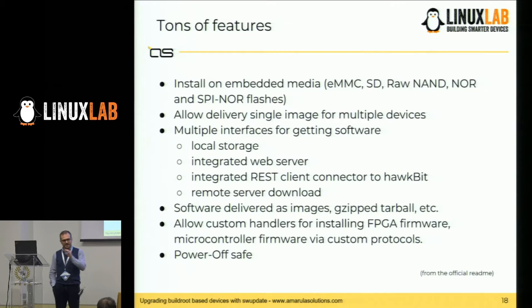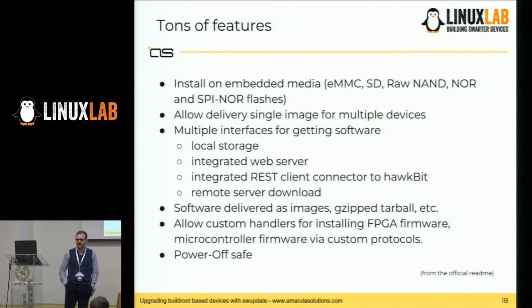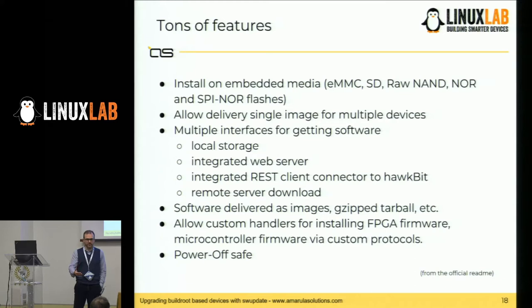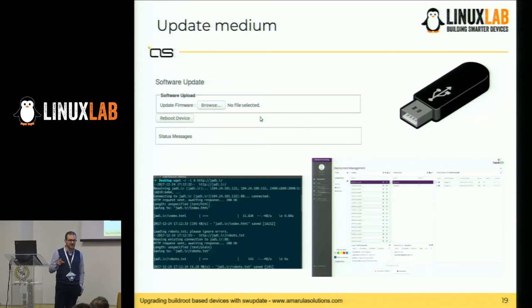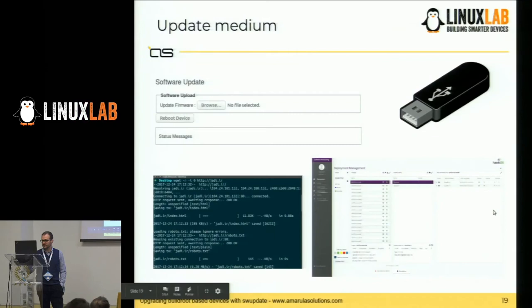SWUpdate supports various image formats including gzip and turbo. It can update a whole system — not only the embedded Linux part but also an FPGA or microcontroller on the same board — checking the version of software on that microcontroller and deciding whether it should be updated or not. Everything is described inside the SWUpdate configuration file. It is power-off safe: if you build your system with resiliency in mind, the system will boot again after a power-off during the update phase.